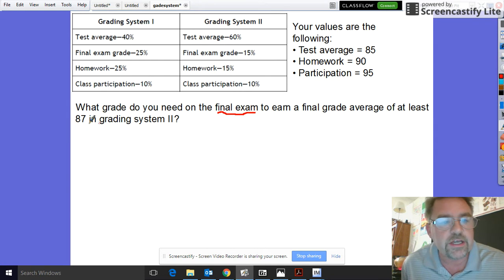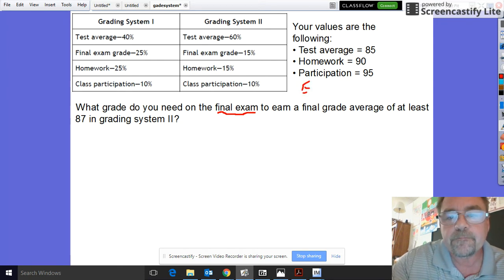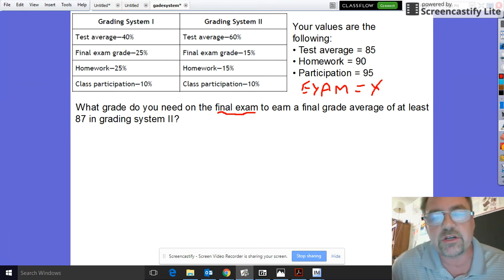The question is what grade on the final exam do you need in order to get an 87 in the current classroom. So basically the final exam is gonna be your variable which is X. You do not know what it is, that's what you're going to be solving for.